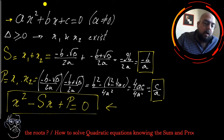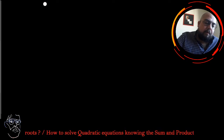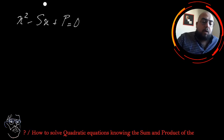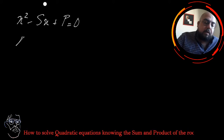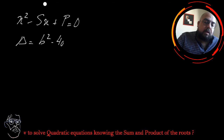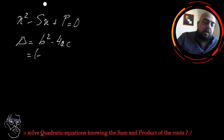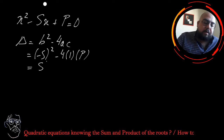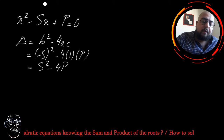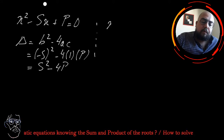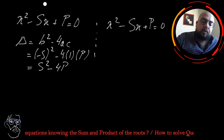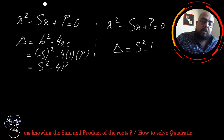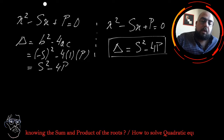So what happens if my equation is in the form x squared minus sx plus p equals zero? If I want to calculate delta, delta equals b squared minus 4ac. Here b is minus s, a is 1, and c is p. So delta equals s squared minus 4p. Whenever you have any equation in the form x squared minus sx plus p equals zero, delta equals s squared minus 4p, and this form can be used directly.